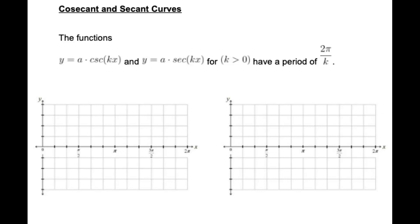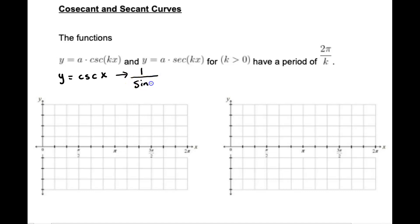Cosecant — I'm going to start off with that one. So if I'm going to graph y equals the cosecant of x, I need to think about what this is related to. It's a reciprocal function. The reciprocal of cosecant is 1 over sine. If I take 1 over the sine, that gives me the cosecant. So if I remember anything about the graph of sine, I should know that the period is 2π.